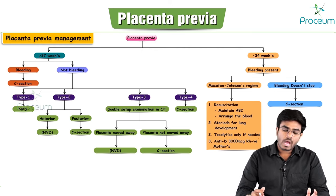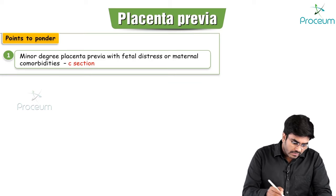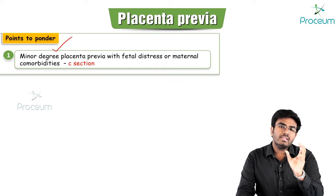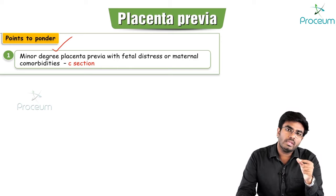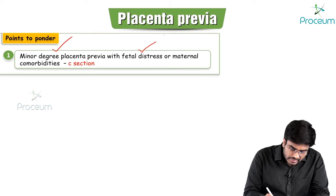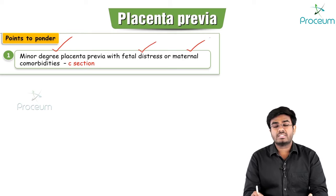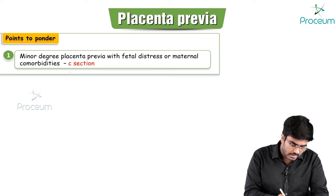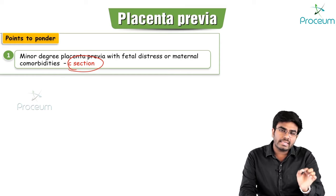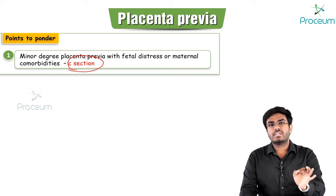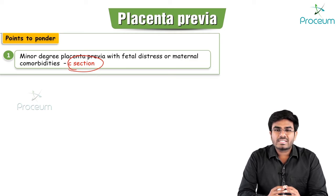To summarize management: before 34 weeks with bleeding, go with expectant management; if it fails, do C-section. For minor degree placenta previa, normal vaginal delivery is usual. However, if minor degree placenta previa is accompanied by fetal distress or maternal comorbidities such as cardiovascular disease or uncontrollable hypertension, C-section should be performed. In the next video, we will discuss abruptio placenta.